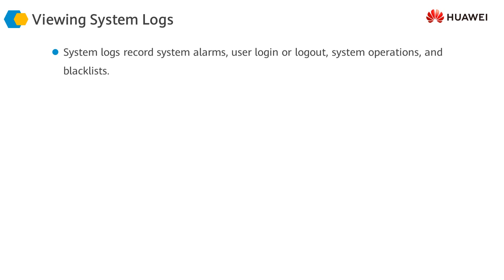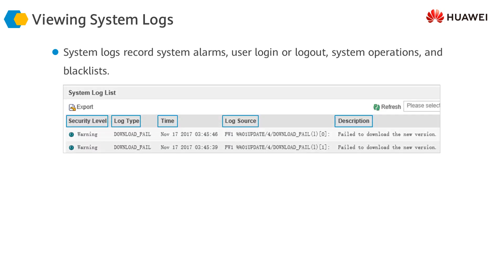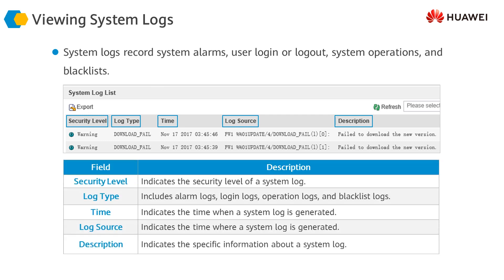System logs can include system alarms, user login or logout details, system operations, and blacklists. By viewing the system logs, the administrator can obtain operating system and hardware-related events. These logs facilitate fault locating and analysis during troubleshooting. Various fields of system logs include security level, log type, timestamp, log source, and description. The time field indicates when a system log is generated, and log type includes alarm, login operation, and blacklist logs. Logs can also be exported to a file in multiple formats for future reference and offline analysis.